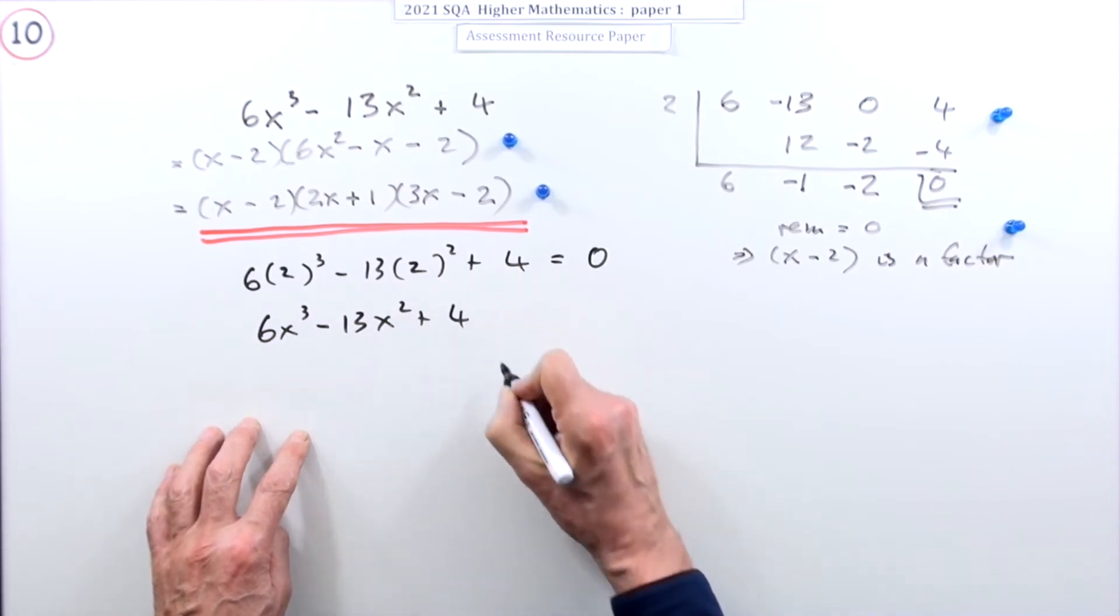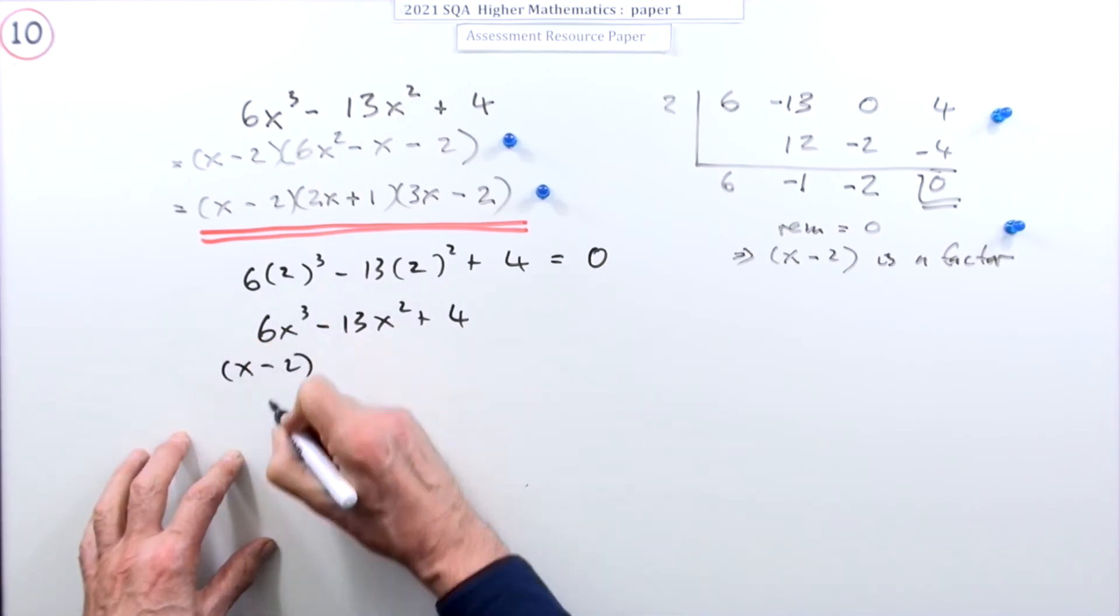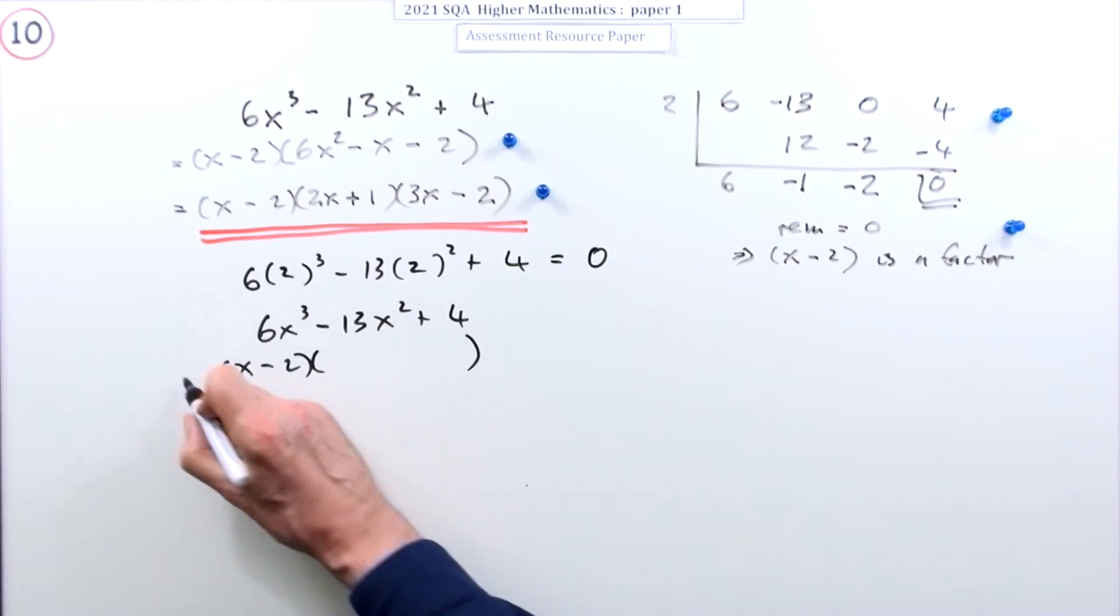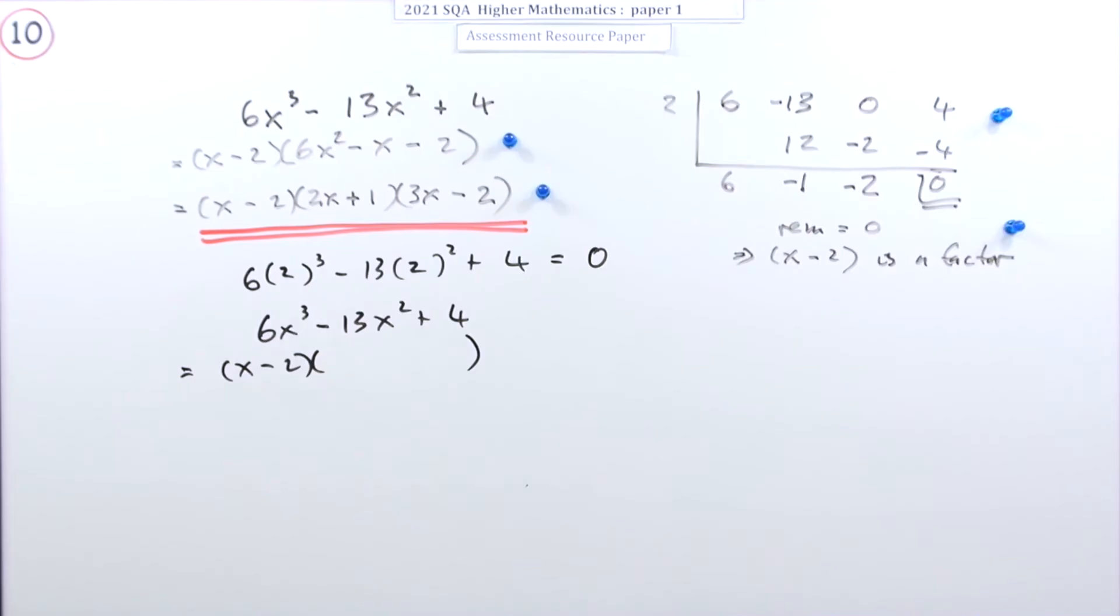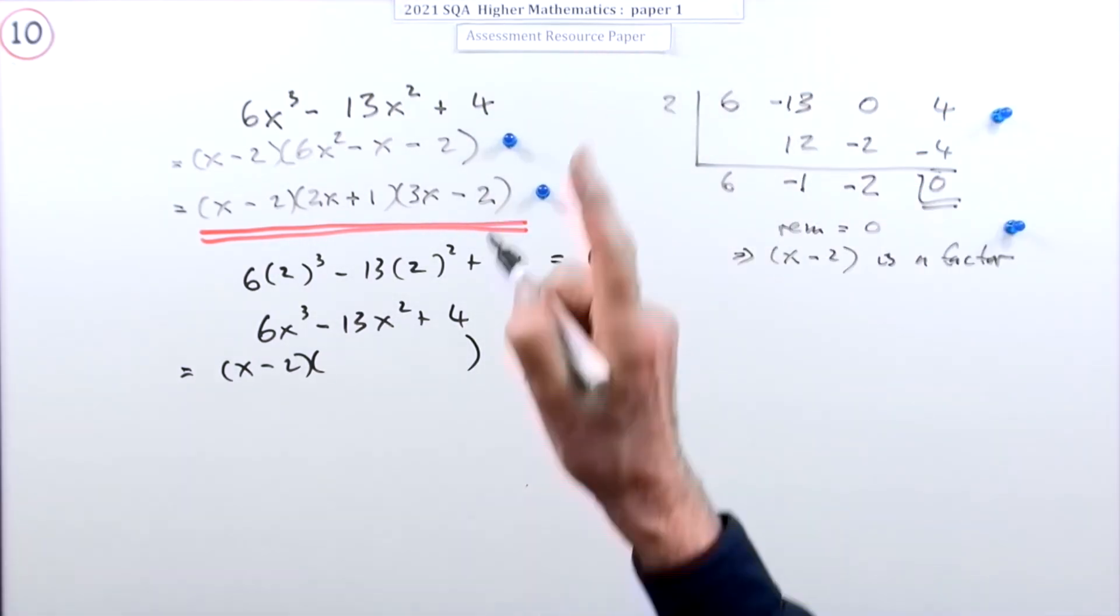From that you could then say, or they would then say, right I've got this expression, I know that two is a root, that means that x minus two is a factor. But what's the other factor? Because with synthetic division table it told you it straight away.